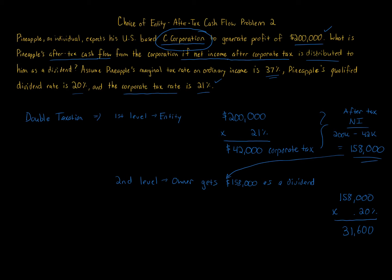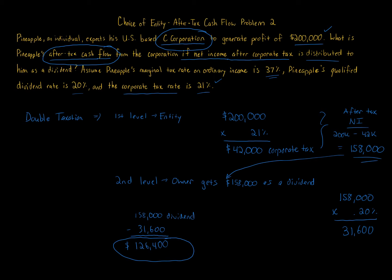The question asks for the after-tax cash flow Pineapple will have after both levels of tax. We take the $158,000 dividend and subtract away the second-level tax of $31,600, and what we get is $126,400. That is the answer — $126,400 is the after-tax amount.